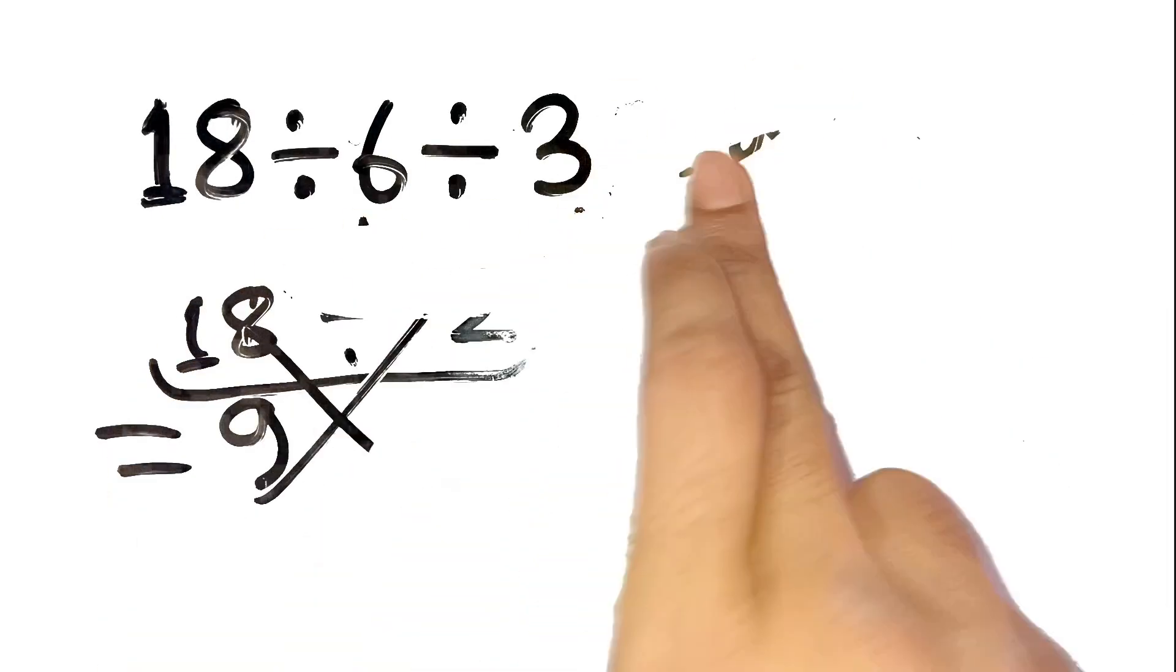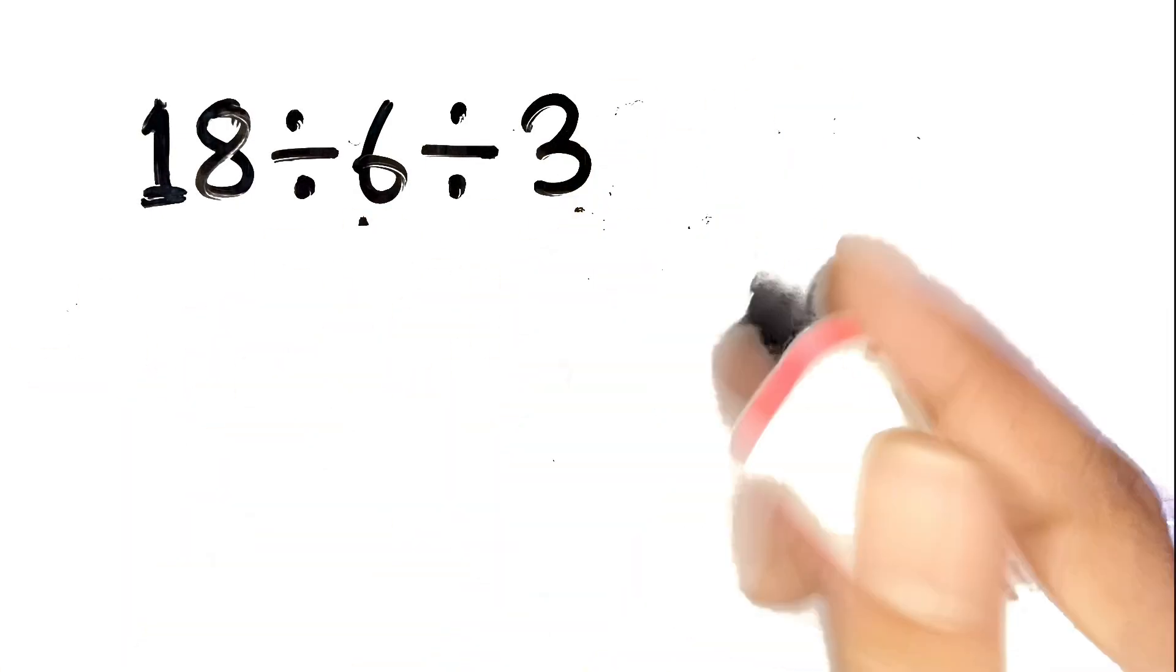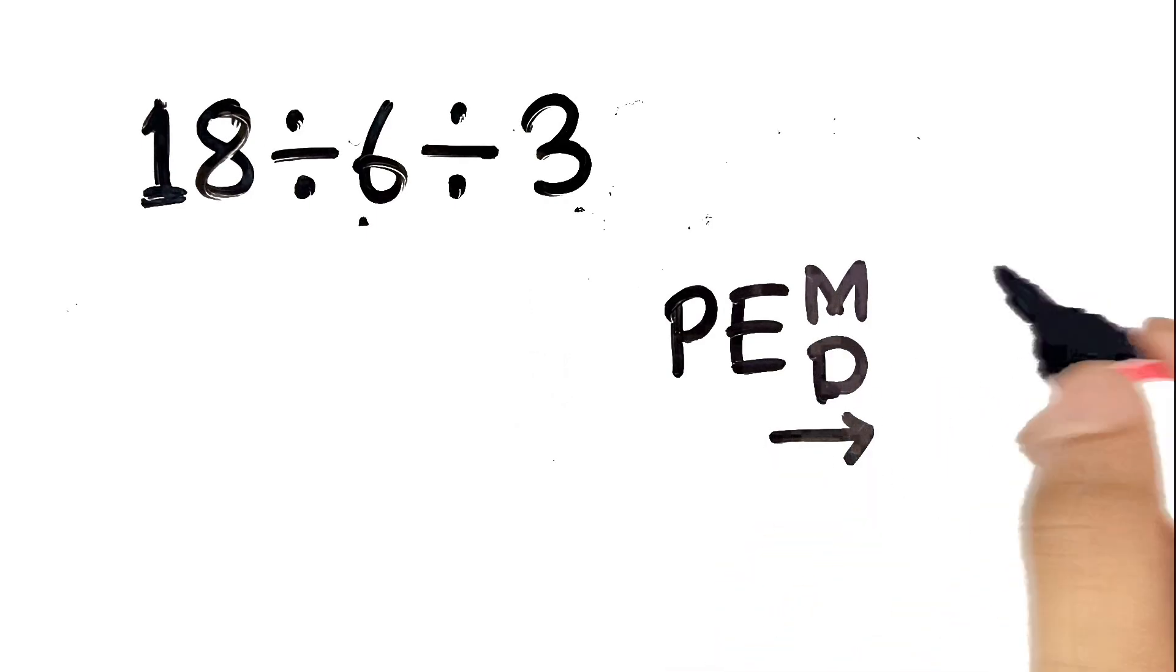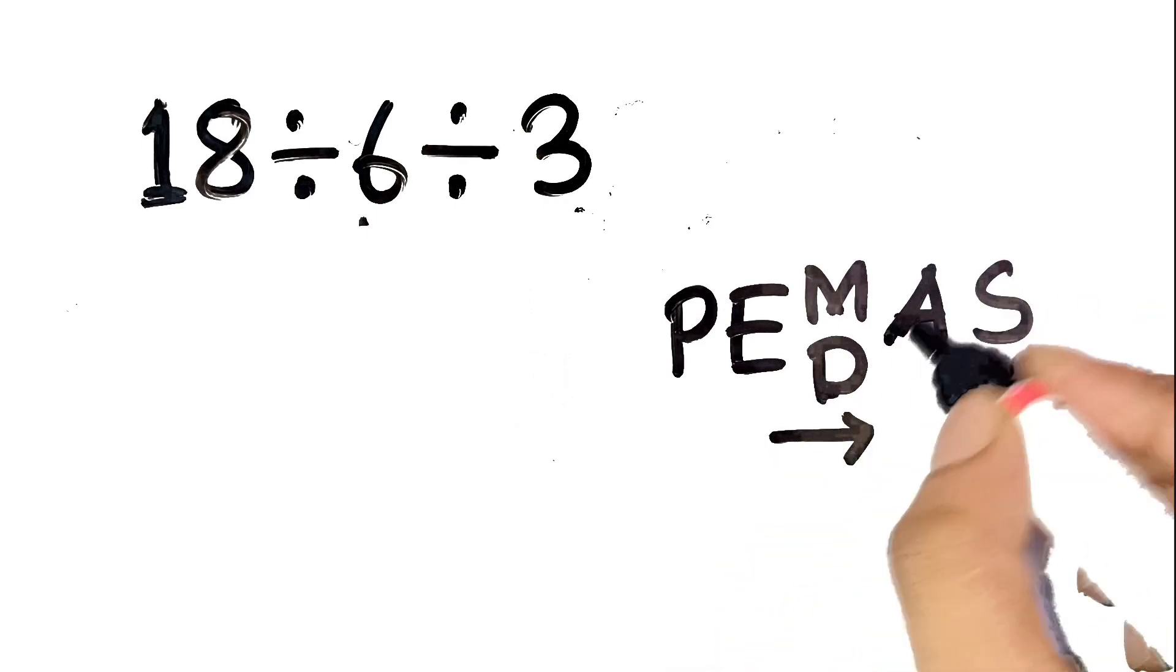Let's slow down and remember PEMDAS. That's parentheses, exponents, multiplication and division from left to right, then addition and subtraction.